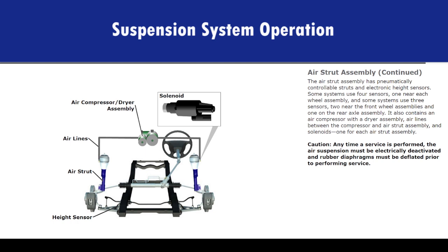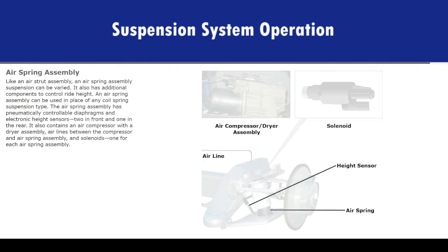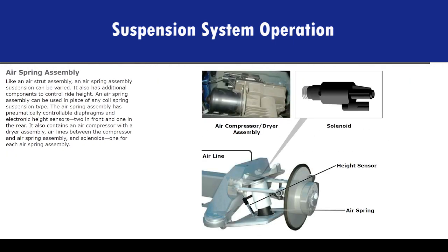Caution: any time a service is performed, the air suspension must be electrically deactivated and rubber diaphragms must be deflated prior to performing service. Like an air strut assembly, an air spring assembly suspension can be varied and has additional components to control ride height. An air spring assembly can be used in place of any coil spring suspension type. The air spring assembly has pneumatically controllable diaphragms and electronic height sensors — two in front and one in the rear. It also contains an air compressor with a dryer assembly, air lines between the compressor and air spring assembly, and solenoids, one for each air spring assembly.